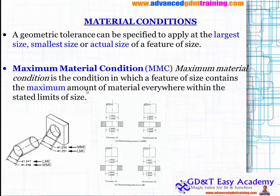The maximum material condition is the condition in which a feature of size contains the maximum amount of material everywhere within the stated limit of size. For a hole, the MMC is the smallest diameter. For a shaft, the MMC is the largest diameter within the tolerance zone. These are the cases where you can interpret MMC and LMC from the dimension.